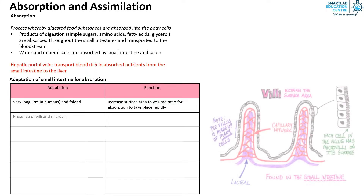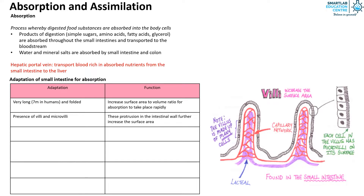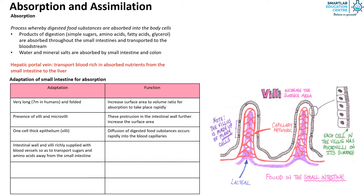There is the presence of villi and microvilli, and these protrusions in the intestinal wall further increase the surface area. The villi have one-cell-thick epithelium, allowing the diffusion of digested food substances to occur rapidly into the blood capillaries. The intestinal wall and villi are richly supplied with blood vessels so as to transport sugars and amino acids away from the small intestine. As food substances are transported away, a concentration gradient is maintained to facilitate diffusion.